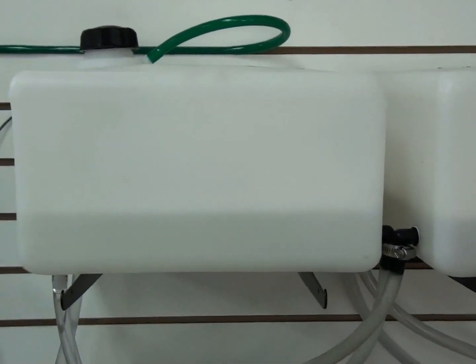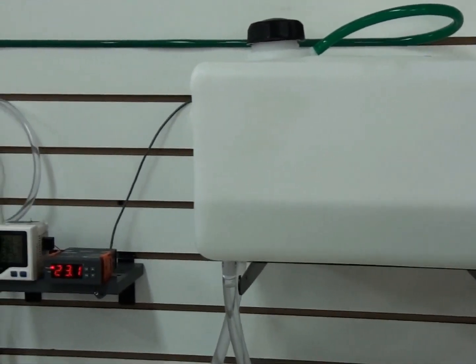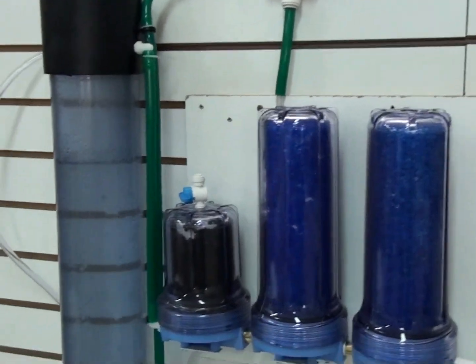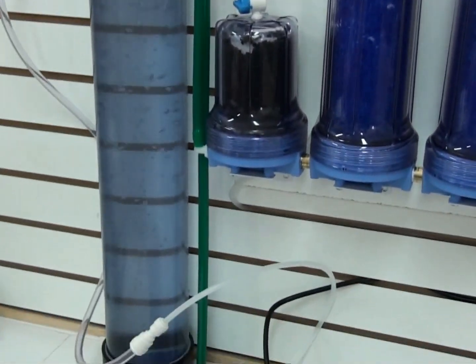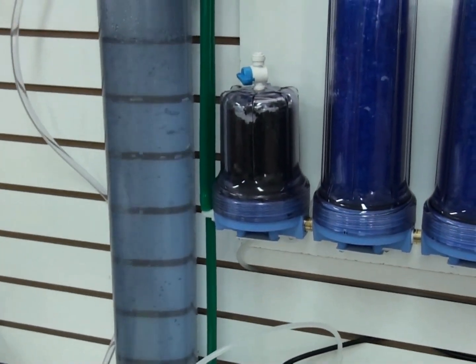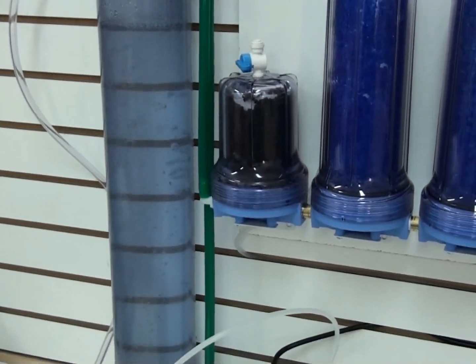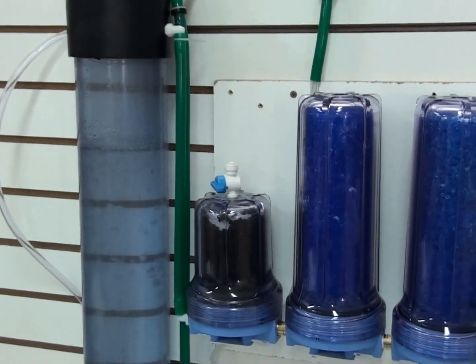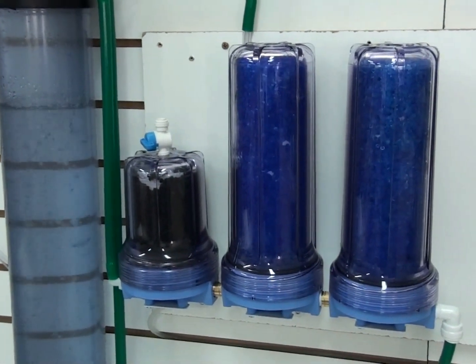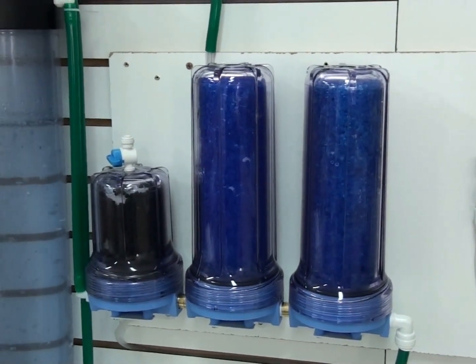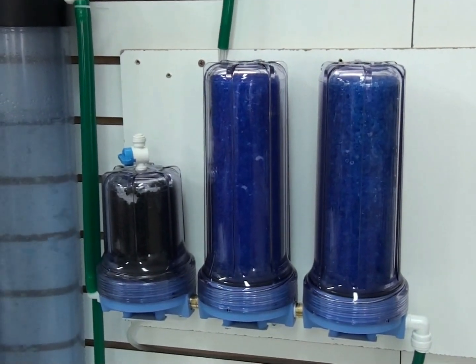From the reservoir the gas exits the top and over to our bubbler. You can see the hydrogen bubbling up through the water column, then exits out the bubbler and enters the dryer system. This is going to take moisture out of the hydrogen.